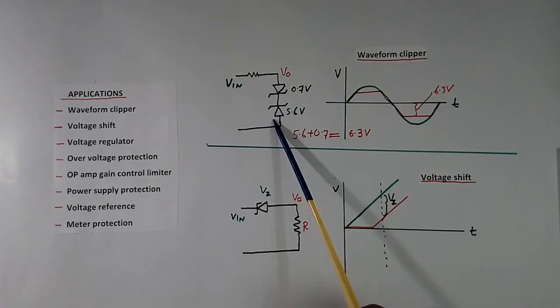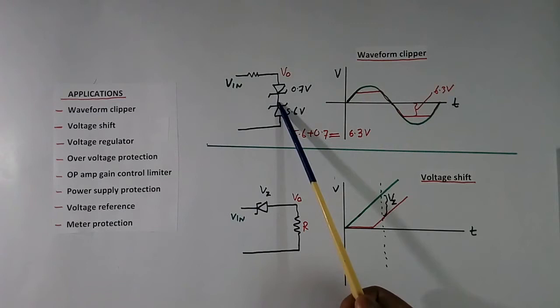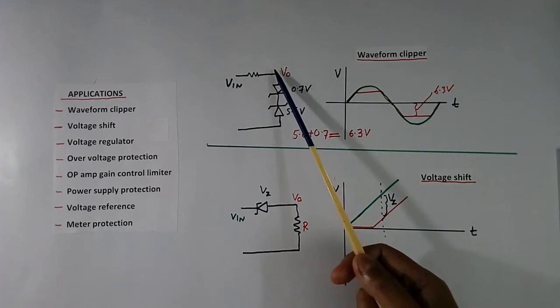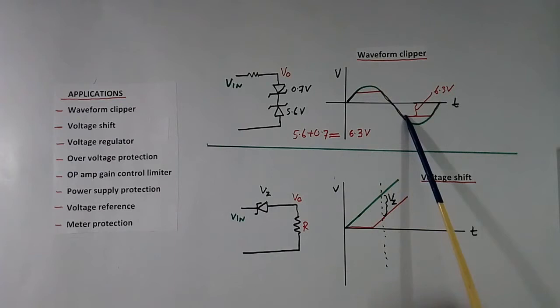Now here I have shown Zener application in waveform clipper. I have connected 2 Zener in series, but polarity is reverse. In one case cathode is at top, another case anode is at top. So total voltage will be, this voltage is 5.6 V plus this drop 0.7 V is equal to 6.3 V. This is resistor to limit the current. When we give input voltage AC, output voltage will not exceed more than 6.3 V. Output will be red color like this. This voltage will be 6.3 V.